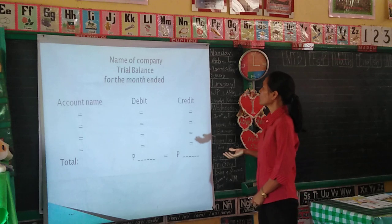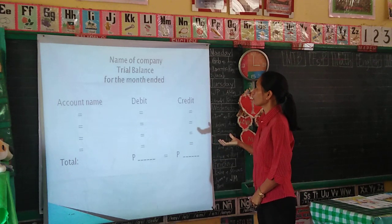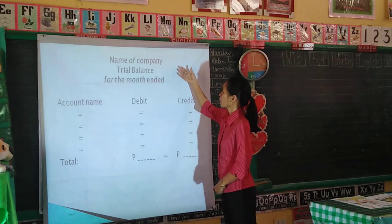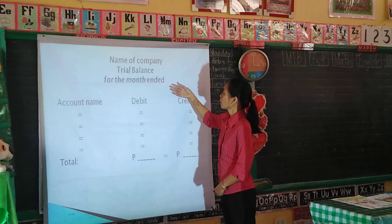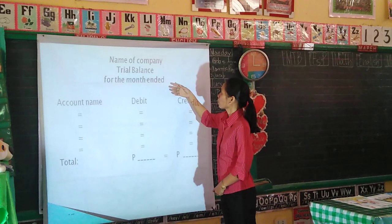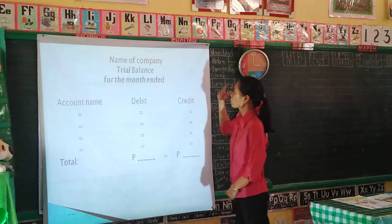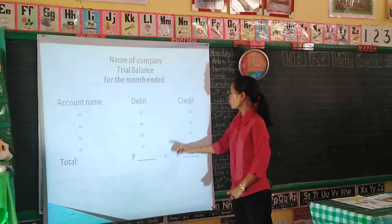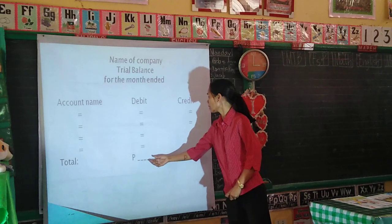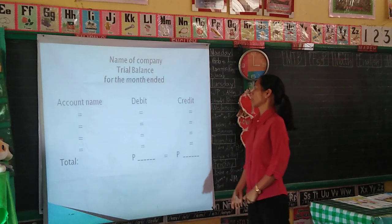Next is the format of the trial balance. It requires the name of the company, the title 'Trial Balance,' and the month covered. The debit side and credit side amounts must be equal.